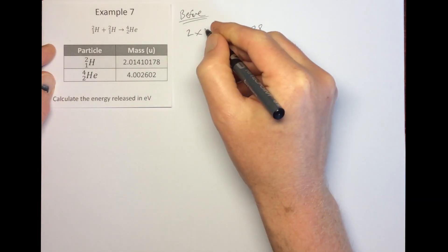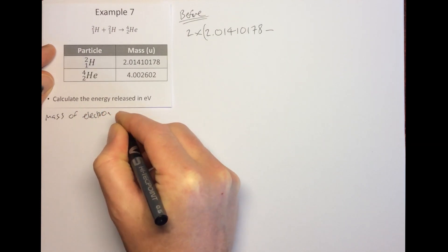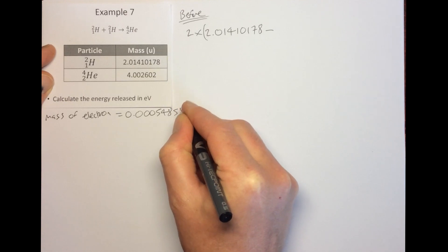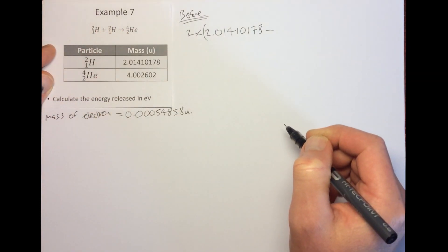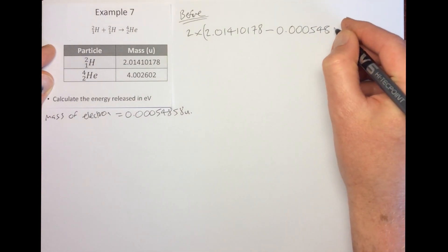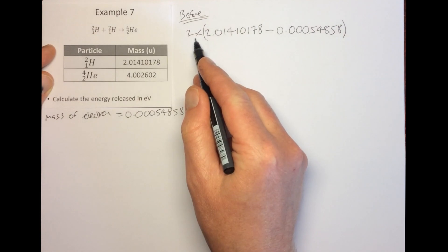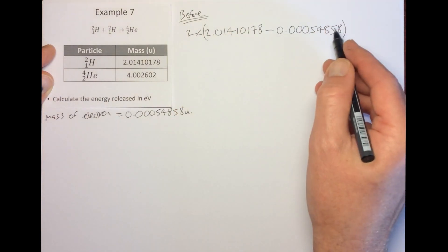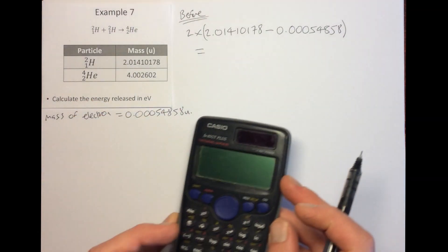We should also subtract the electron mass. The mass of an electron is 0.00054858 u. Since the deuterium atom has one proton and therefore one electron, we subtract the electron mass to get the mass of the deuterium nucleus. That gives us the mass of the deuterium nucleus, and we multiply by two because there are two deuterium nuclei.